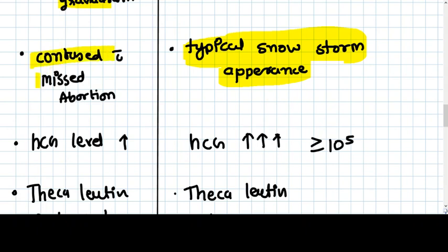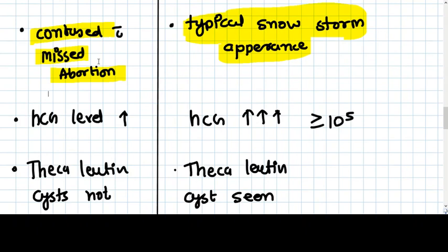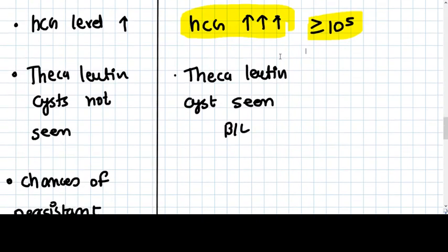The hCG level increases in both, but in complete mole it is very, very high, in the range of lakhs. Because hCG is more in complete mole, theca lutein cysts are seen bilaterally, whereas theca lutein cysts are not seen in partial mole because the hCG level is not that high.